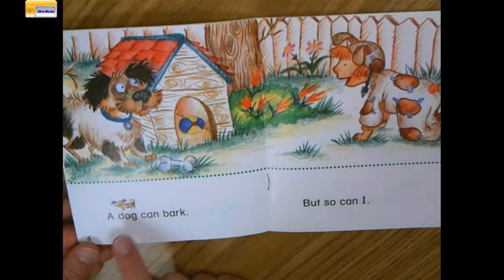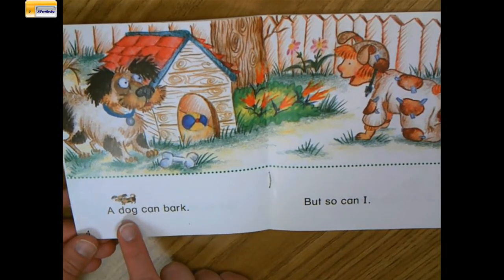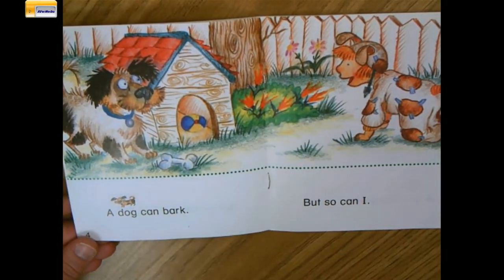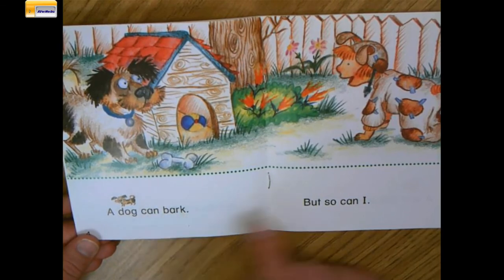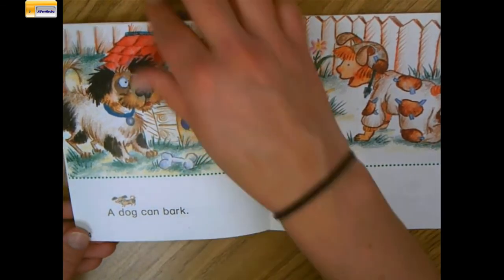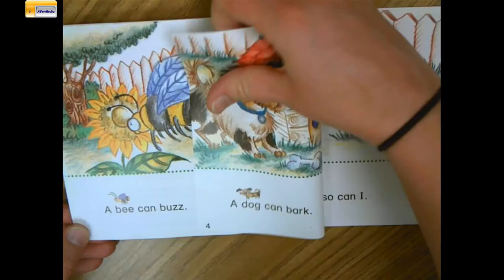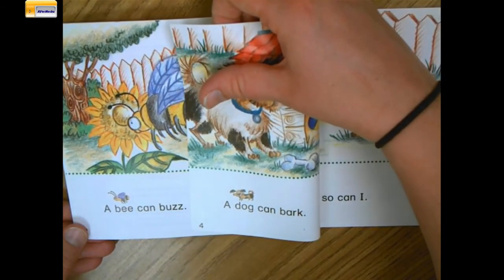I'm noticing that a word changes here in the beginning and the ending of the first sentence. A dog can bark, but so can I. So this one we had to look for two words that were changing in the pattern.